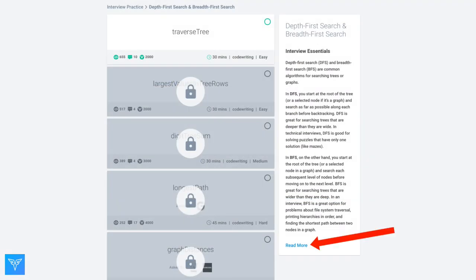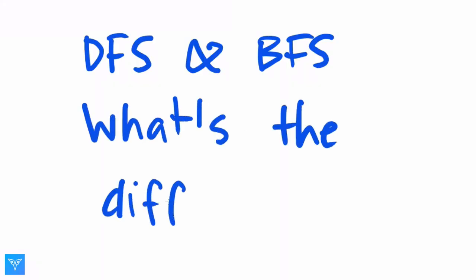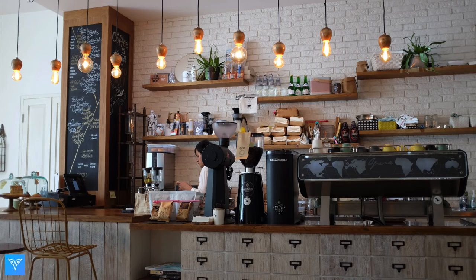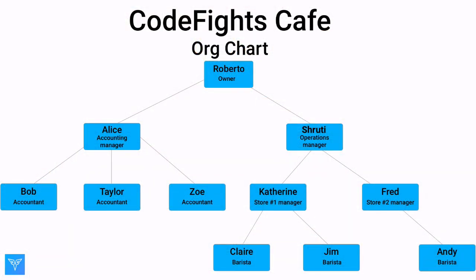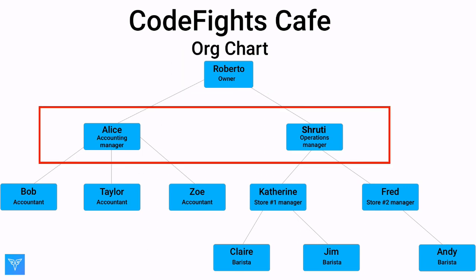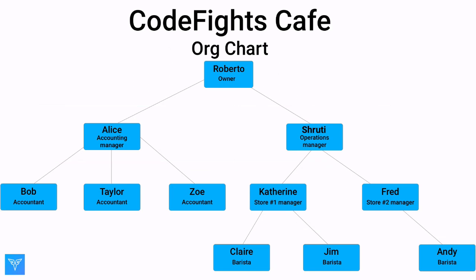See the read more section of our in-depth tutorial for details on how to implement DFS and BFS. To highlight the difference between using depth-first and breadth-first searches, let's use the organizational chart of the Codefights Cafe as an example. As you can see, the owner of the cafe is at the root of the tree. The department heads are at the next level, and the middle managers who report to the department heads are on the third level, and so on.